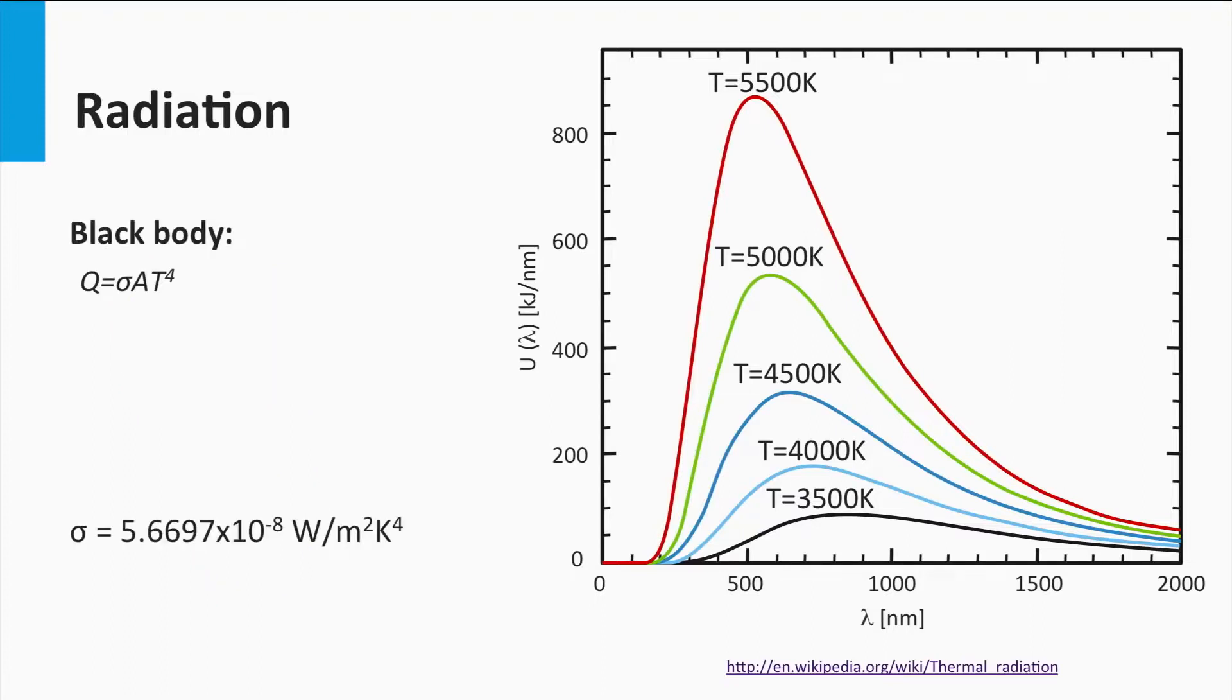Planck's law describes the electromagnetic radiation at a certain temperature in any medium as a function of wavelength, as shown in this graph. By integrating Planck's law over all wavelengths, it gives the total energy emitted per unit of area by the formula given here. Where sigma is the Stefan-Boltzmann constant and T is the temperature of the body in Kelvin.